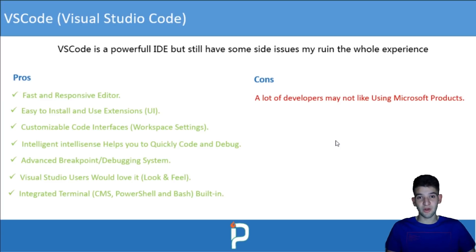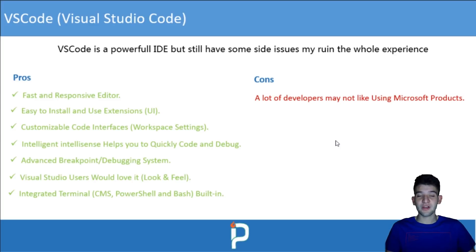Now for the cons: a lot of developers don't like using Microsoft products. I know plenty of developers who won't use anything Microsoft-related. However, in recent years Microsoft has shifted toward open source — acquiring GitHub and releasing open source tools. So if you're that person, give Microsoft another chance and try VS Code.